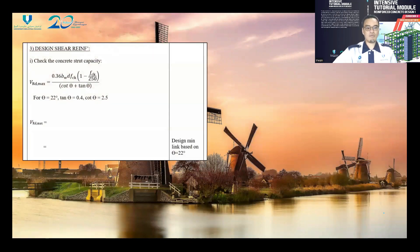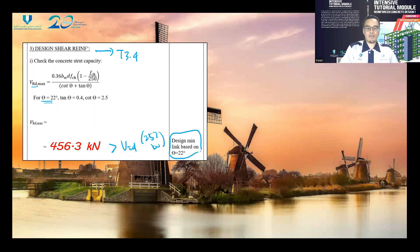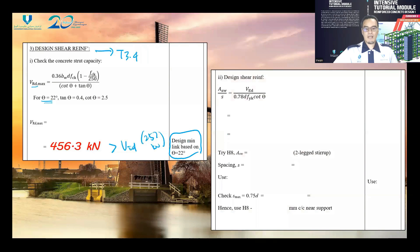Next we move to the design of shear reinforcement. You may refer to tutorial 3.4. First, we calculate Vrd,max for theta equal to 22 degrees, which is equal to 456.3 kilo-Newton. This is greater than our VEd of 252 kilo-Newton, so we can design the minimum link based on theta equal to 22 degrees.